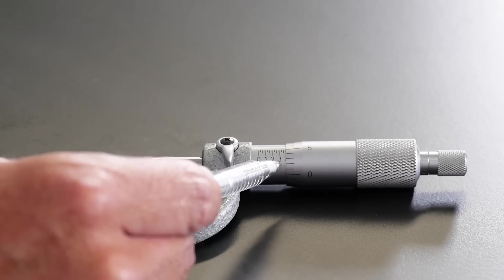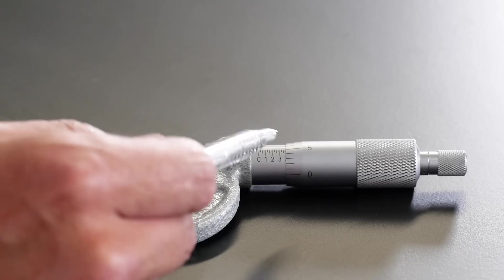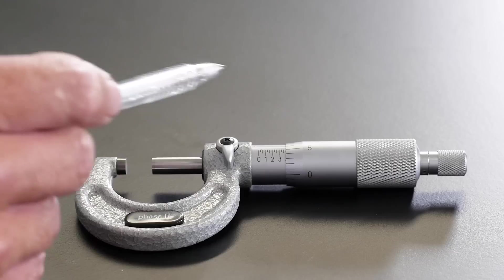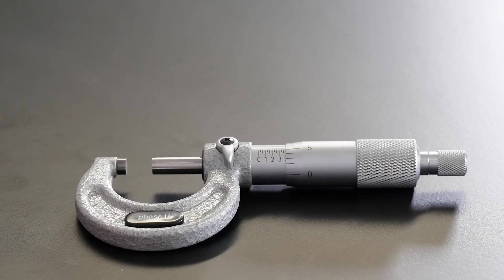The first thing we want to look at is how many numbers are visible on the barrel or sleeve of our micrometer. Here you can see that we have the number three being exposed and what this means is that we have a measurement of 0.3 inches. Beyond that though, we can also see we have three more increments exposed. Remember each of those increments represents 0.025 inches. So we know that at this point we have 0.375 inches.